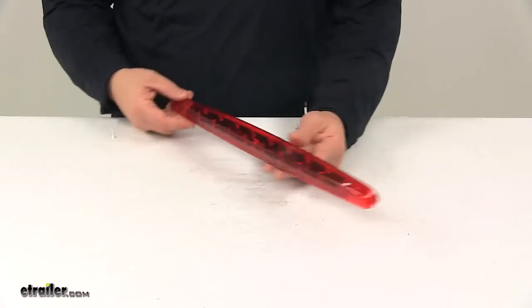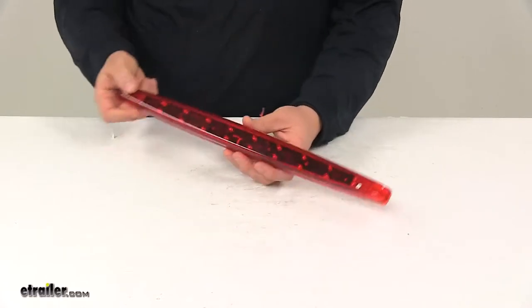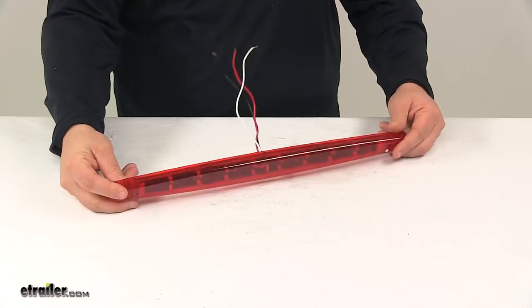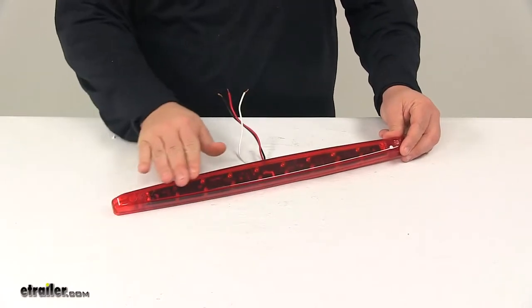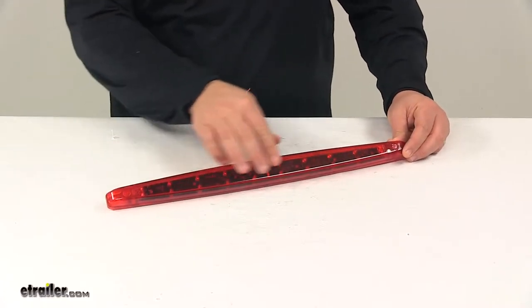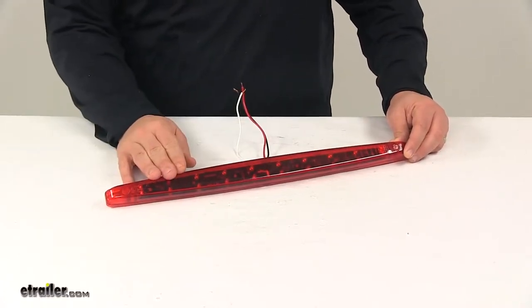It can be mounted horizontally or vertically, whatever works best for your application. It does feature a really nice weatherproof housing and lens unit that's strong and durable, protects the internal LEDs from dirt and moisture, and this strip contains a total of 20 diodes or 20 LEDs.